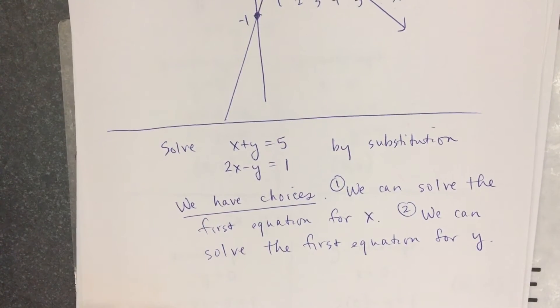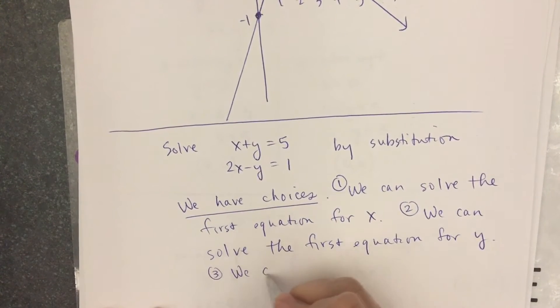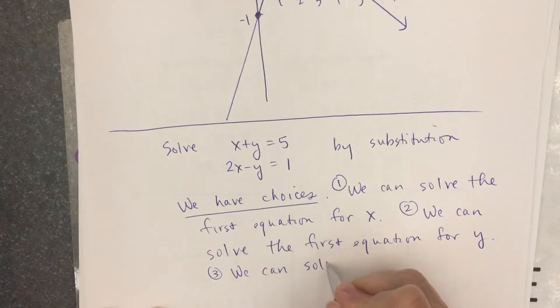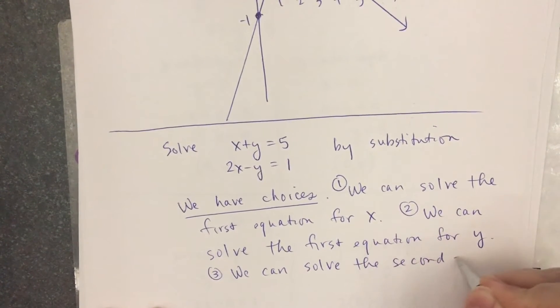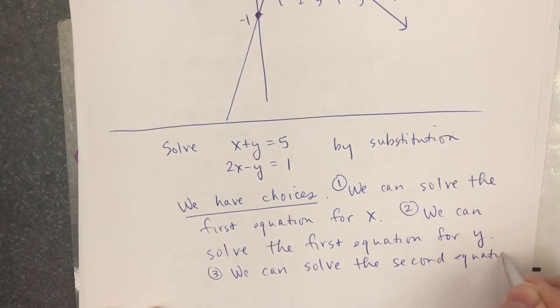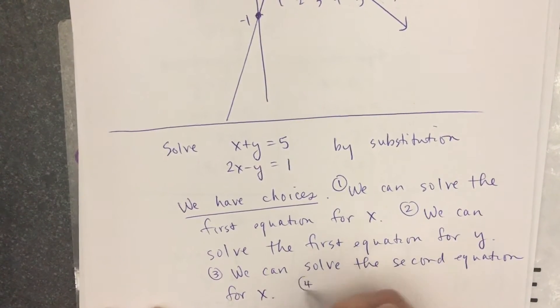Another choice is I could solve the second equation for x. There are four choices. We can solve the second equation for x. And what's the fourth choice?